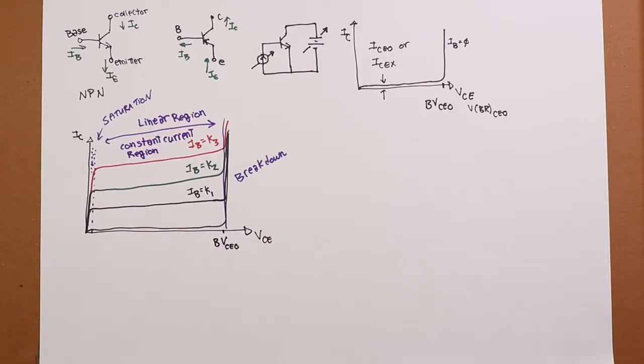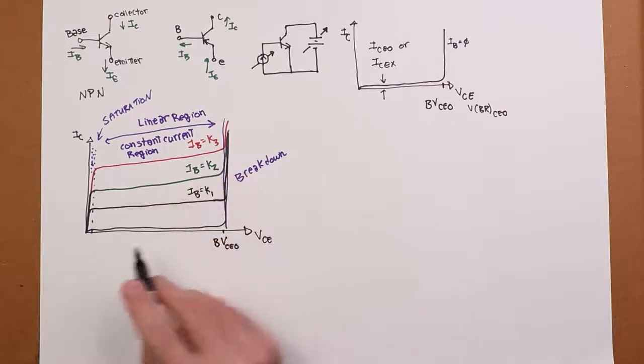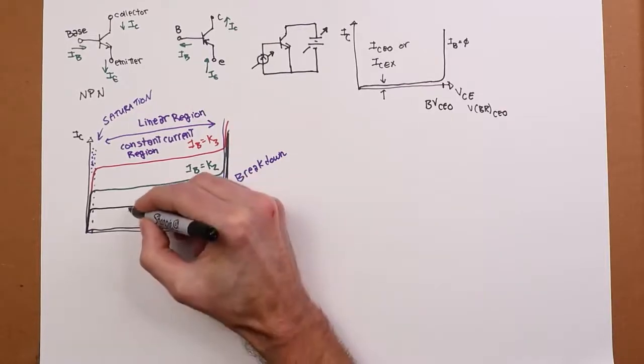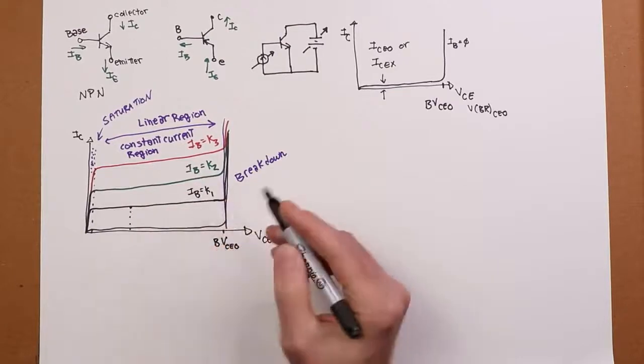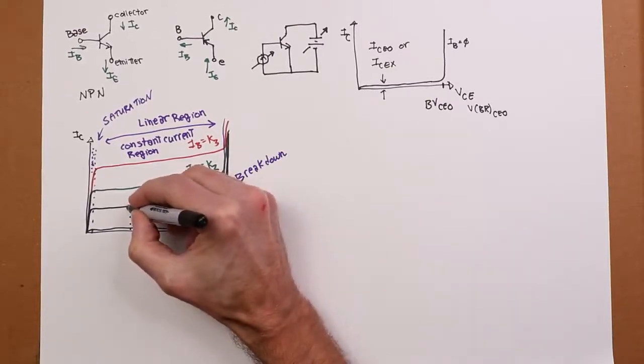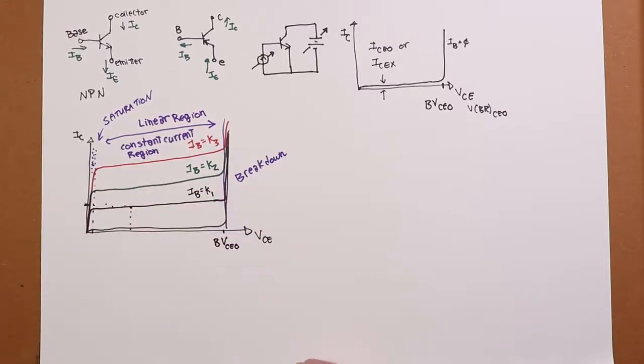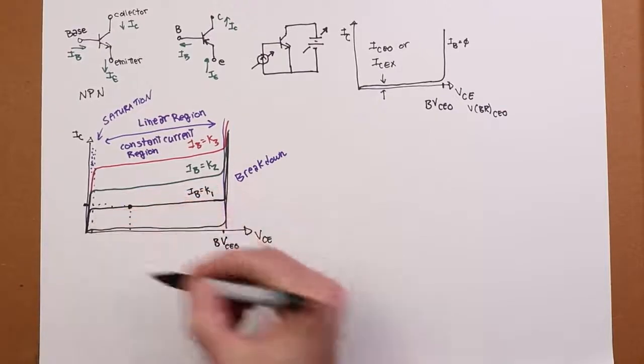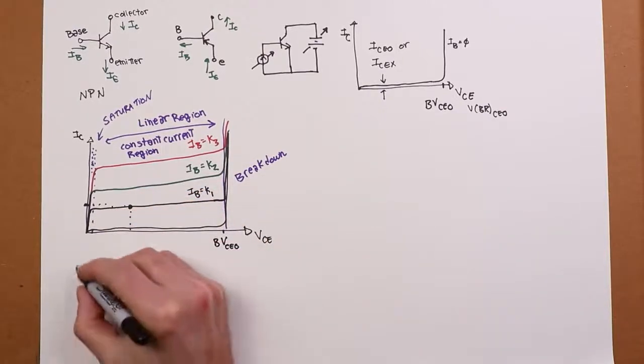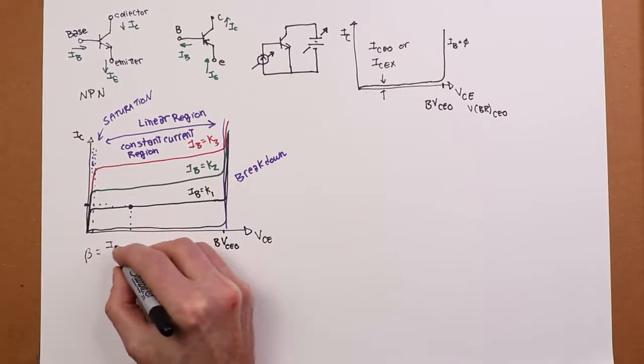Now, if we had nice scales on here, you could come up at some particular collector emitter voltage, find an associated current. Like I said, maybe K1 is 10 microamps. Come back across here, read that collector current, the associated collector current at that operation point. And that ratio gives you the beta. Remember beta is equal to IC over IB.